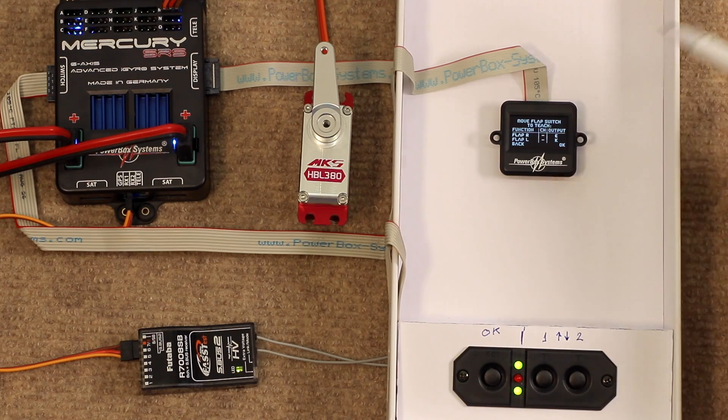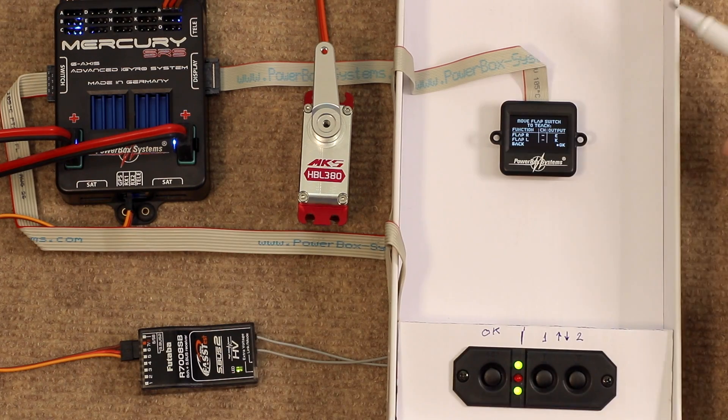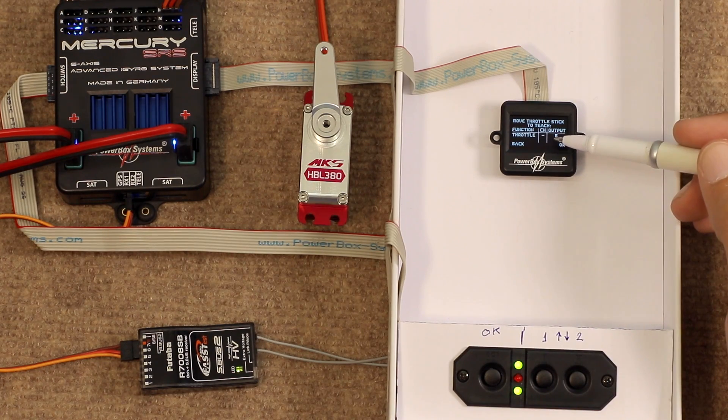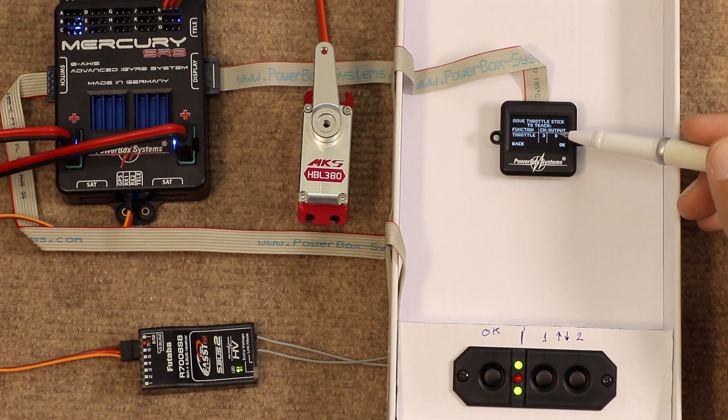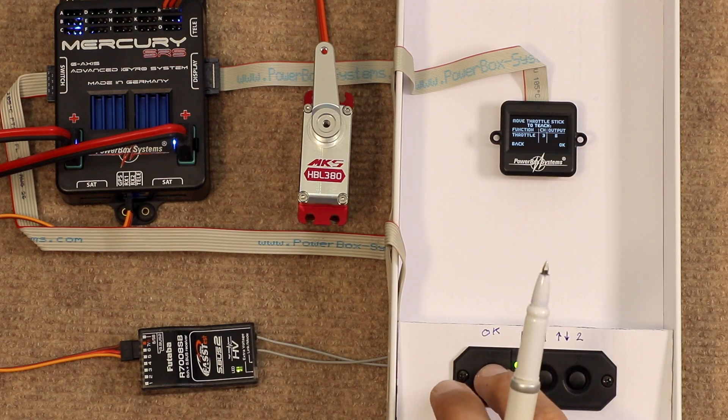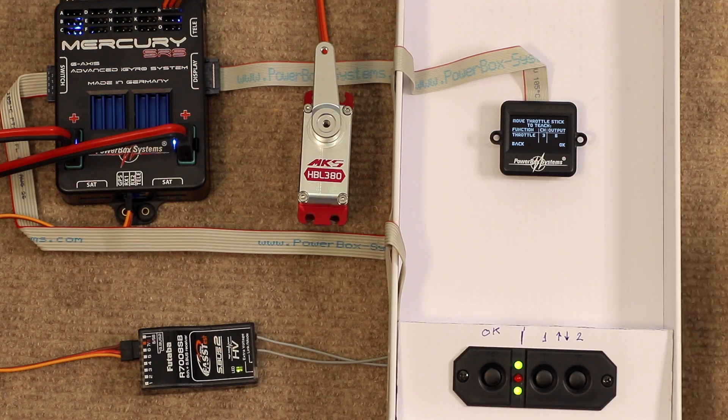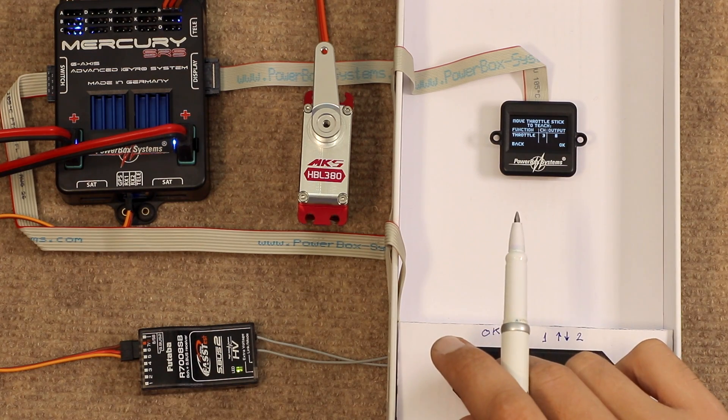Flap. I'm not going to use flap, so I just ignore that completely. Throttle. Let me just move the throttle. Channel 3. Correct. Set to output B. You don't need to remember these, you can check on them and look at them later. And modify them as well, of course.